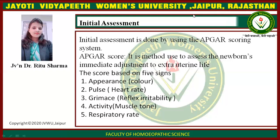The score is based on five signs. The first is Appearance, that is color; the second is Pulse, that is heart rate; the third is Grimace, that is reflex irritability; the fourth is Activity, that is muscle tone; and the fifth is Respiration, that is respiratory rate.